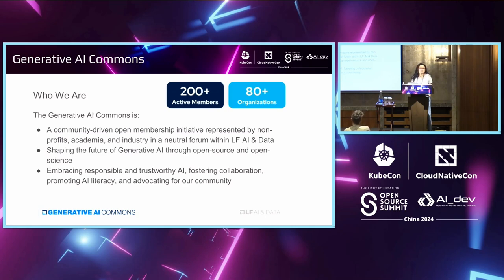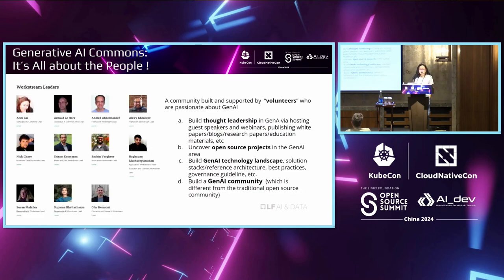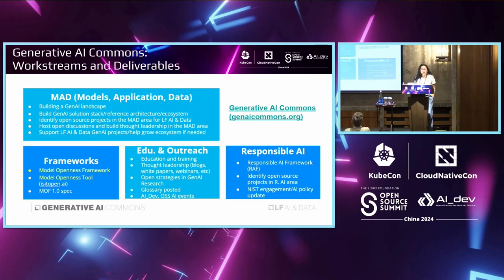Who has not heard of Generative AI Commons? Generative AI Commons was created to help advance the development and innovation of Generative AI technologies, and we have over 200 active members from over 80 organizations. It is a place for thought leadership building as well as a platform for collaboration doing open source projects, and it is volunteer-based. We subscribe to open membership — you don't have to work for a company that's part of Linux Foundation to participate. Anybody in the world is welcome.